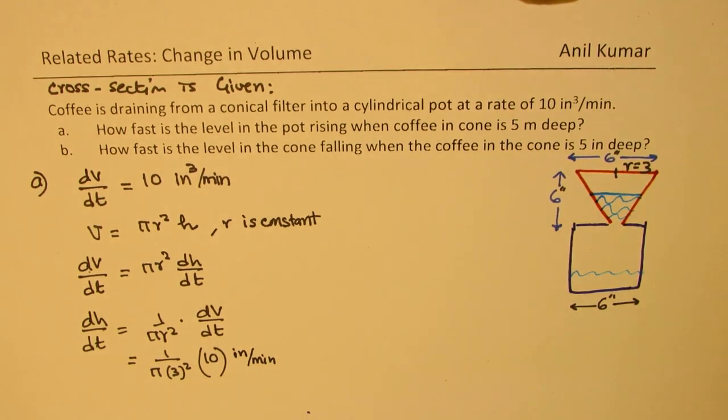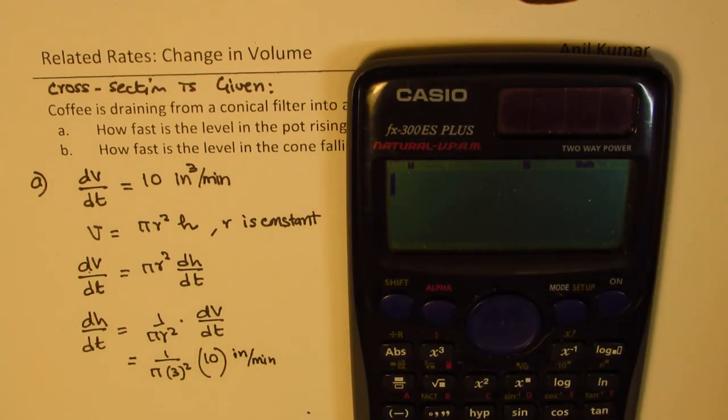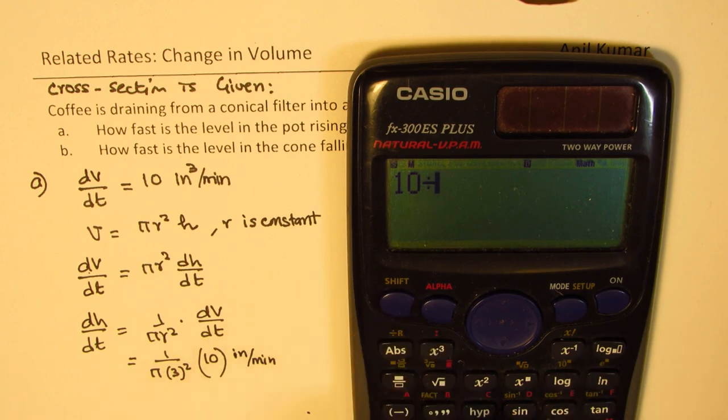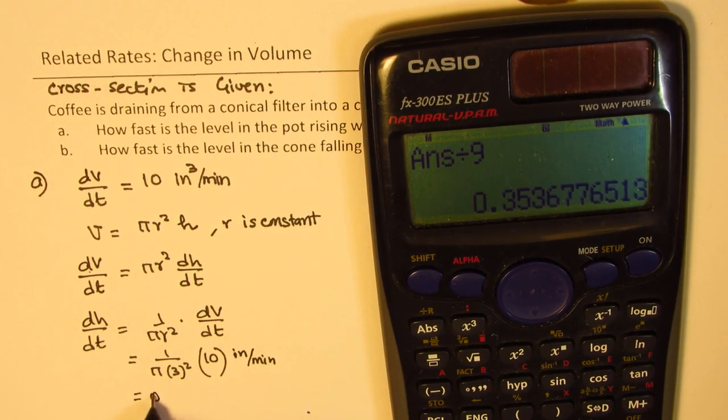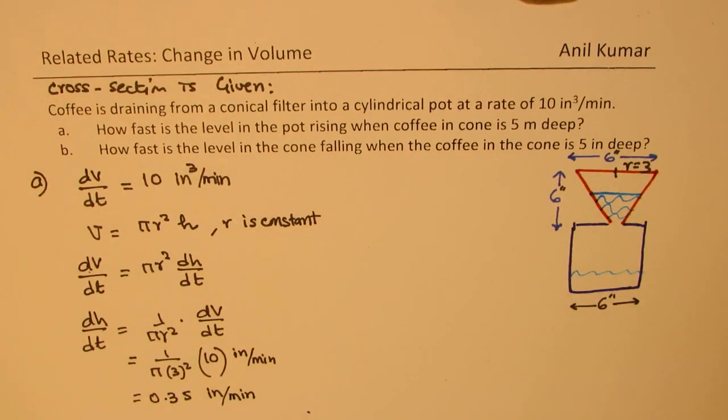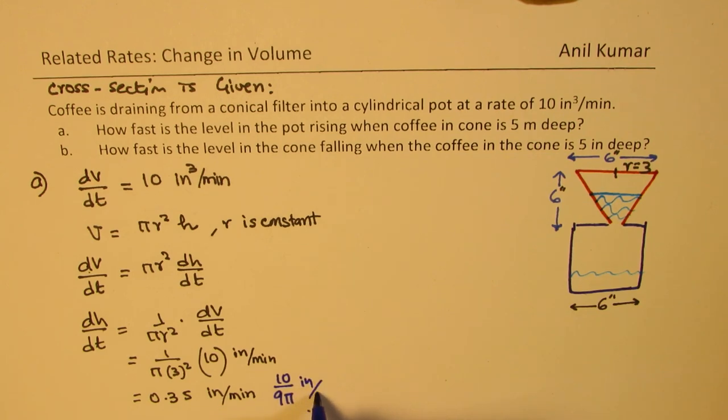So let's use the calculator and find the answer. We need to divide 10 by π and then divide by 3 squared, which is 9. So we get around 0.35 inches per minute. So it is a constant rate at which the height is going to increase, and that is 10 by 9π. So the exact value is 10/9π inches per minute. This is the approximate value.